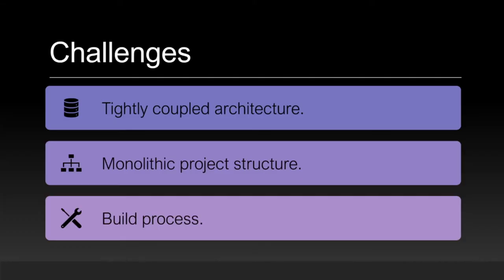What are the challenges while integrating React? First, tightly coupled architecture — C# and Java are tightly coupled, so it's very difficult to push any third-party or separate code into the existing codebase. Then there's the monolithic project structure, which doesn't allow you to include a separate package easily. And the build process — different languages use different build systems like NuGet, Maven — while JavaScript uses React, Webpack, Gulp, Grunt, and similar tools.